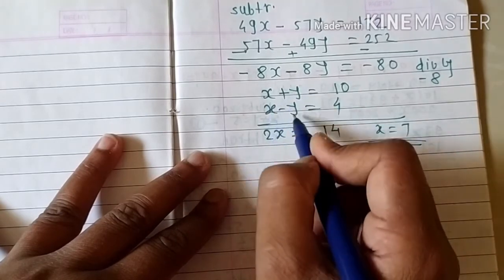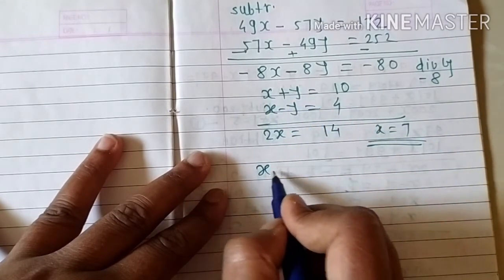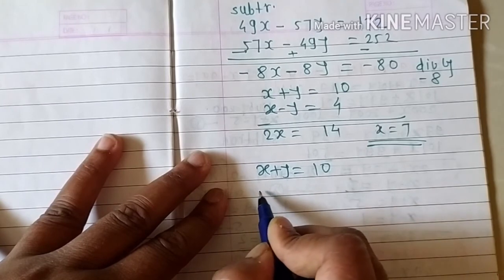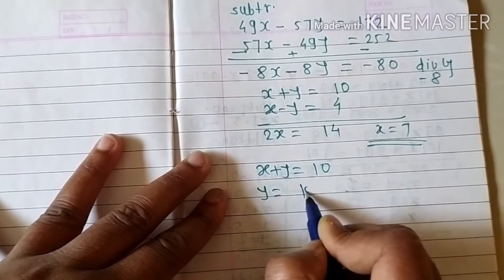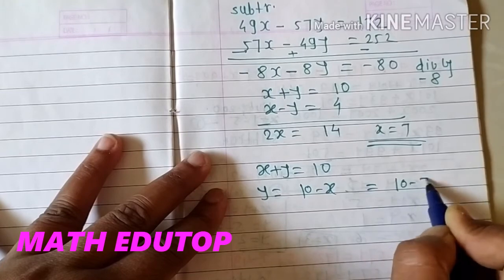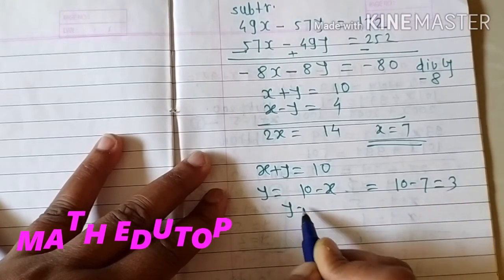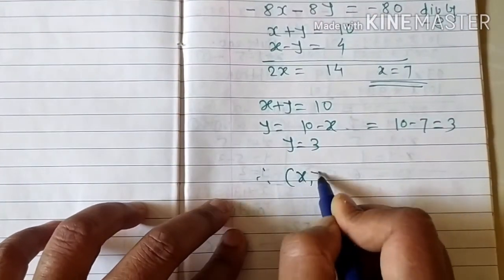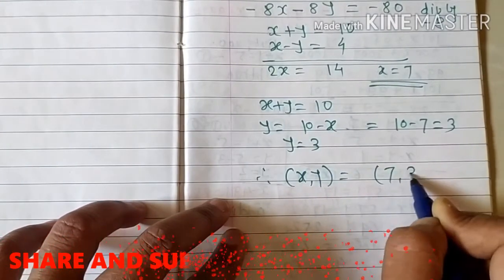Substitute x equals 7 into equation two: x plus y equals 10 gives y equals 10 minus 7 equals 3. Therefore the solution is x equals 7 and y equals 3.